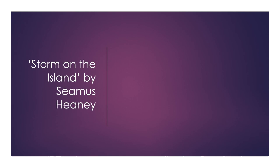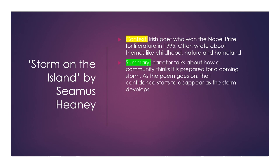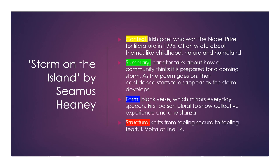Storm on the Island by Seamus Heaney. The Irish poet won the Nobel Prize for Literature in 1995 and often wrote about themes like childhood, nature and homeland. The narrator talks about how a community thinks it is prepared for a coming storm, but as the poem goes on their confidence starts to disappear as the storm develops. The form is blank verse which mirrors everyday speech, first person plural to show collective experience, and only one stanza. The structure shifts from feeling secure to fearful, with a volta at line 14.